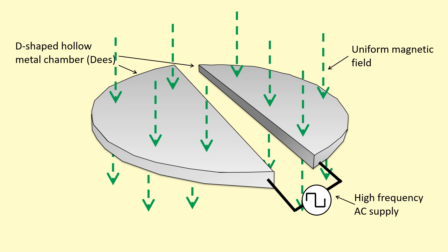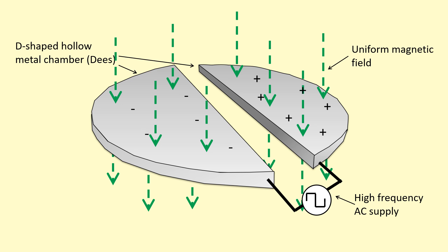Then we apply a high frequency AC supply so that it makes one of the D's positive and the other negative, and then it switches over at high frequency — positive and negative, then negative and positive, and so on. In between, in the middle, we put a proton in — this proton is going to accelerate towards the negative plate.